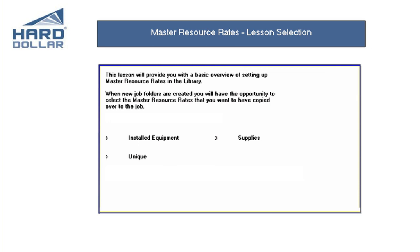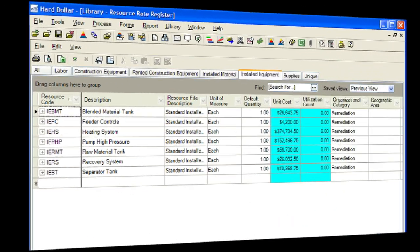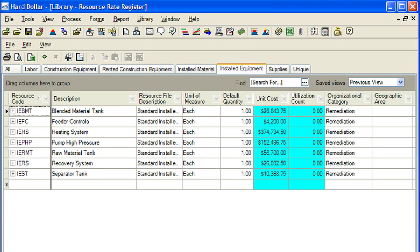When new job folders are created, you will have the ability to specify the master resource rates that you want to have copied into the new job. This section will demonstrate how to create an installed equipment master resource in the library. The master resource rate register installed equipment form is used to create or modify the rate charged for the installation of an individual installed equipment resource of a certain class.